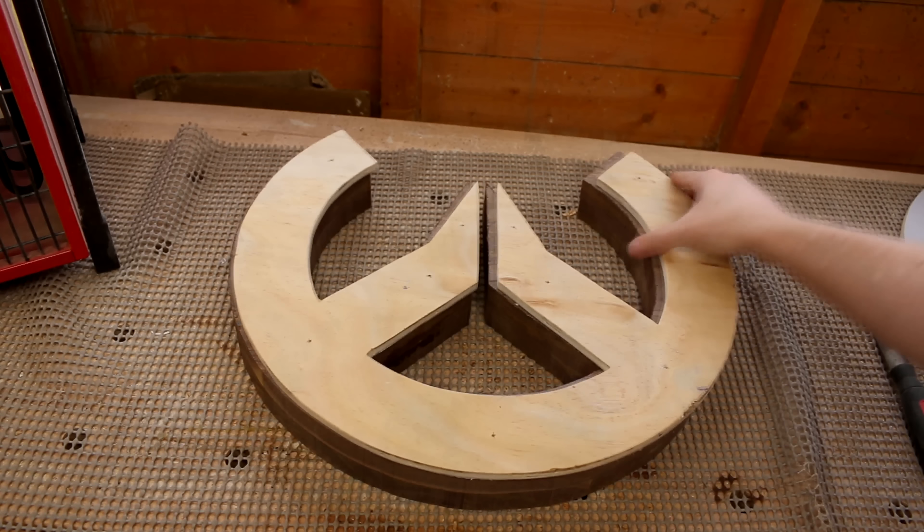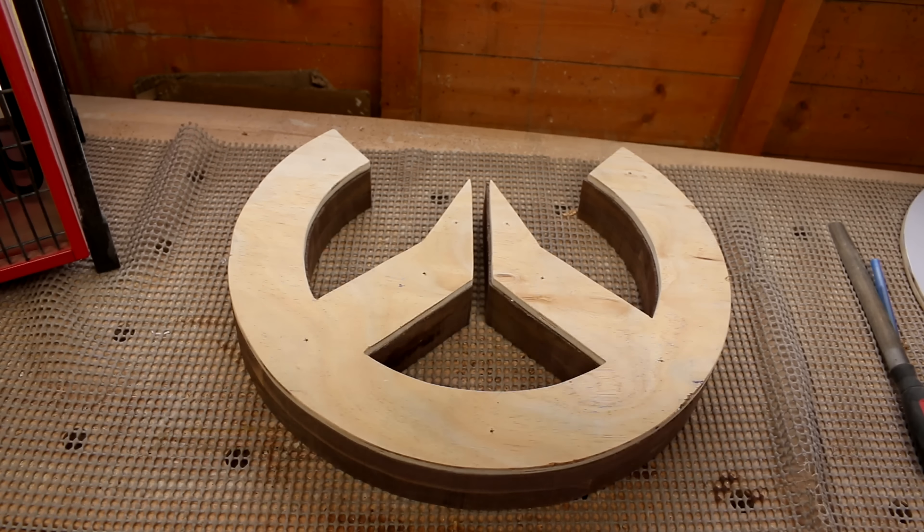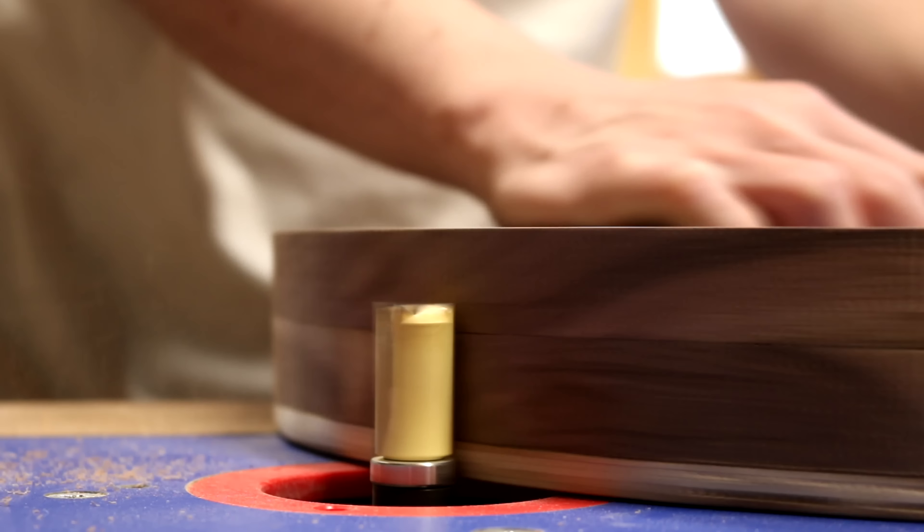The holes won't be seen on the back of the light when it's done. The template now offers a guide for my flush trim router bit.